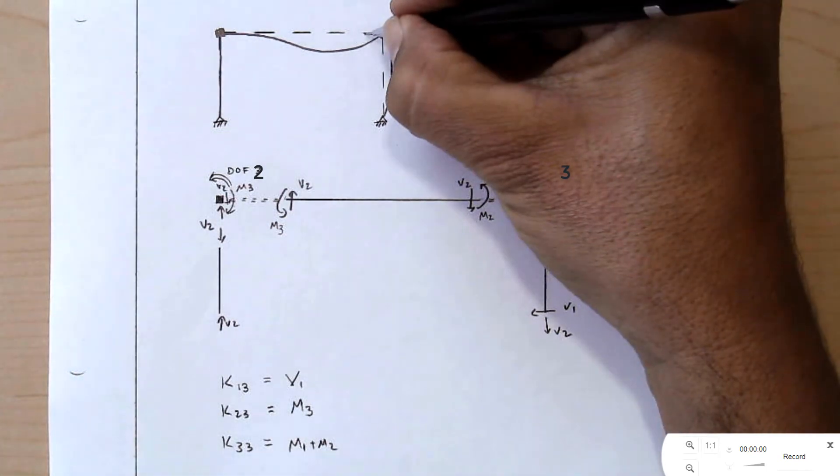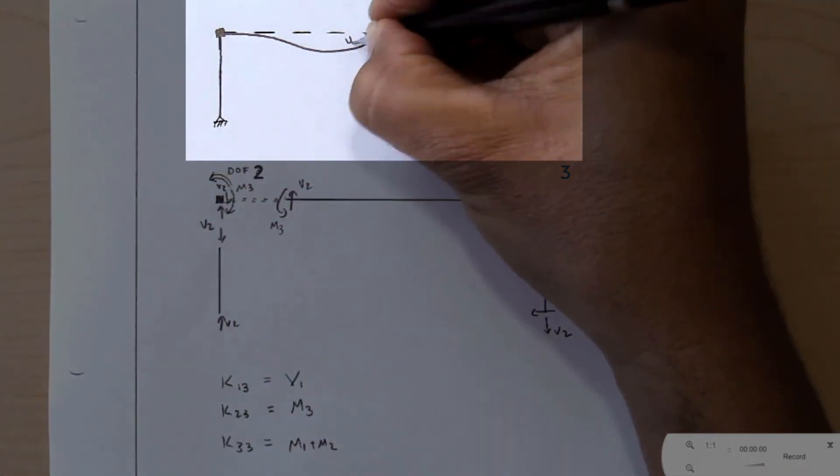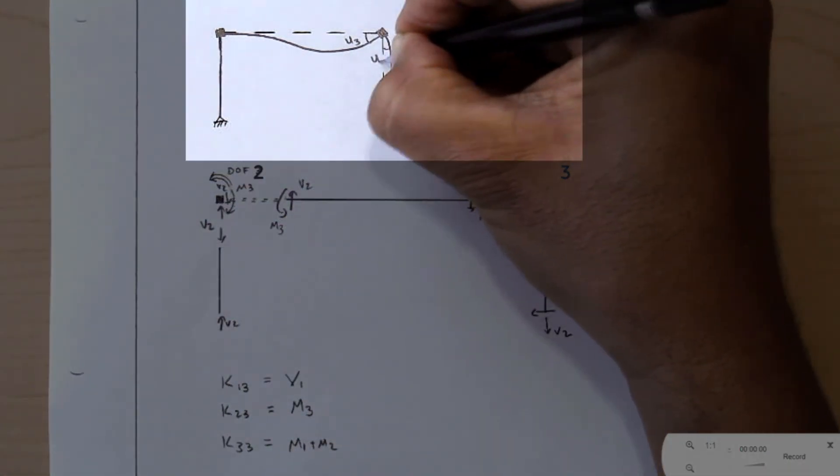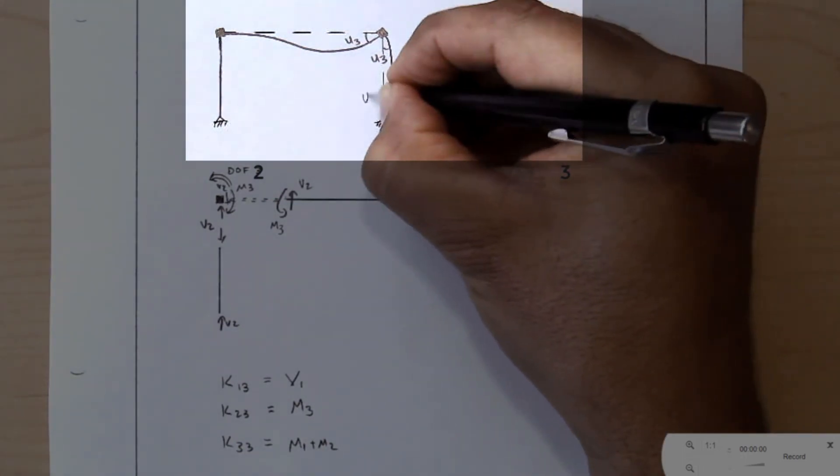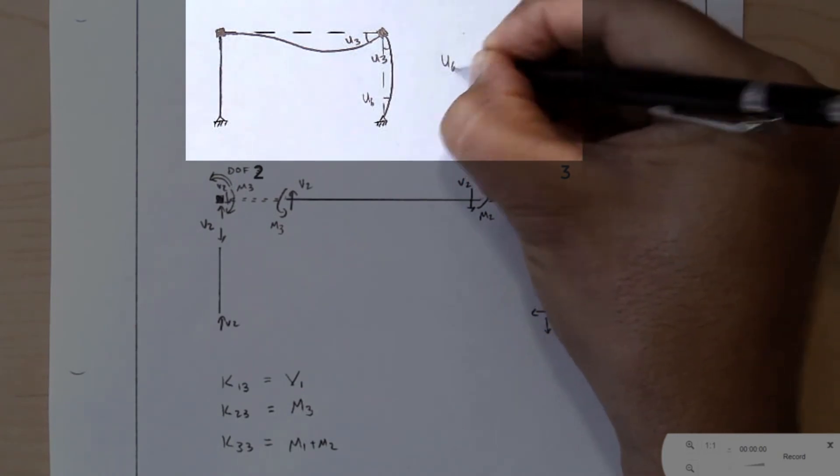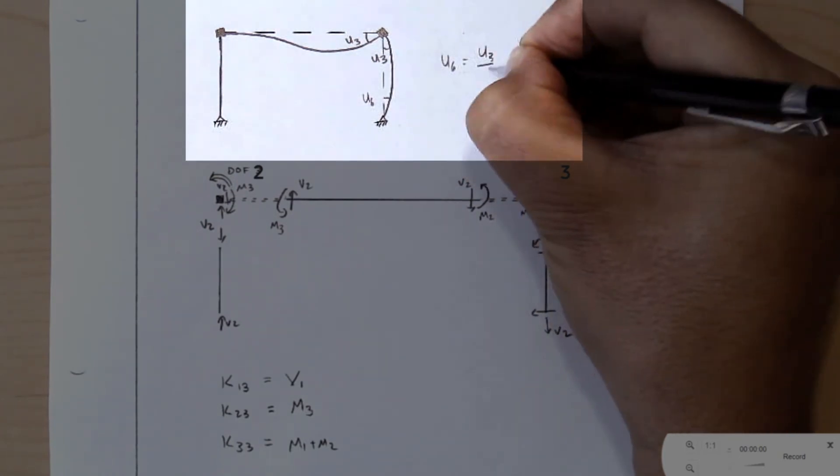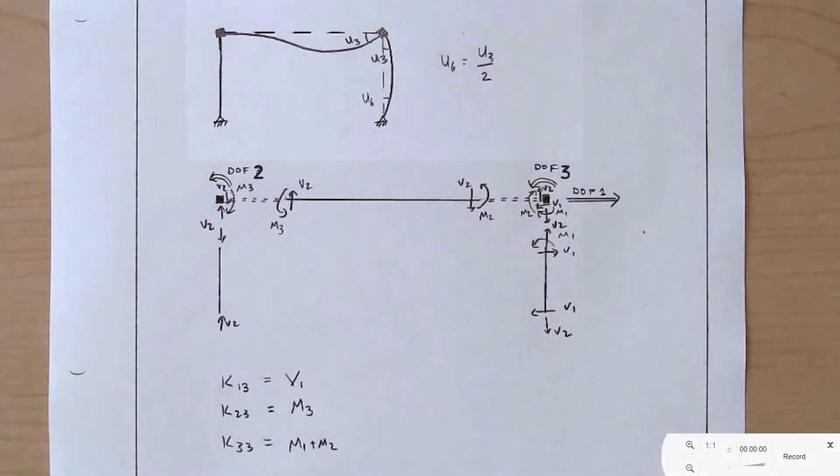Lastly, we'll keep track of our displacements. Rotation over here, U3, and this will be U6, where U6 is equal to half of U3. So now we have all three of our degrees of freedom, all nine of the values of our stiffness matrix. The next step is looking at the load vector.